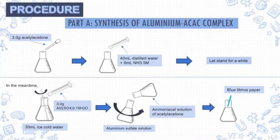Moving on to the procedure for Part A: the synthesis of aluminium acetylacetonate complex. Firstly, 3 g of acetylacetone was added into an Erlenmeyer flask. Then, distilled water was added followed by ammonia. The solution was allowed to stand for a short time. In the meantime, hydrated aluminium sulfate was dissolved in ice-cold distilled water, and the ammoniacal solution of acetylacetone was added to the aluminium sulfate solution in small portions with continuous swirling.